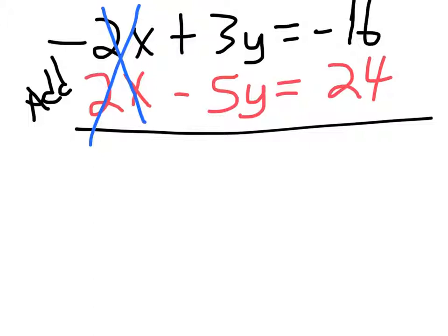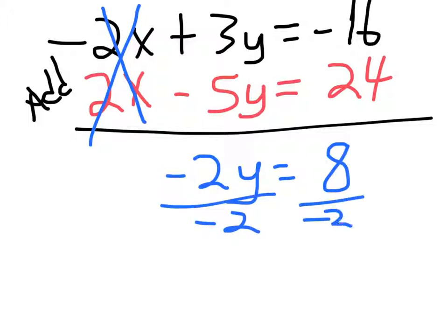3y plus negative 5y gives us negative 2y. Negative 16 plus 24, that gives us 8. So by adding the two equations, we've got this nice, simple, small equation here. We're able to solve quite quickly that y is negative 4 for where they cross.